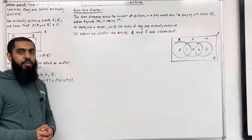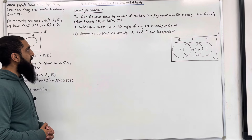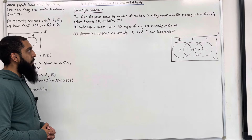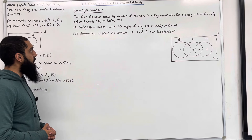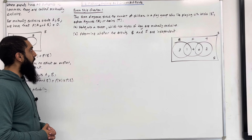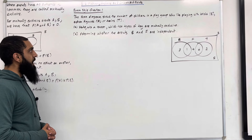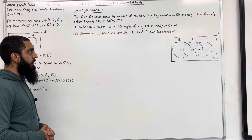Here is exam style question 1. The Venn diagram shows the number of children in a playgroup who like playing with bricks, represented by B, action figures, represented by F, or trains, represented by T. Part A: state with a reason which two types of toy are mutually exclusive.